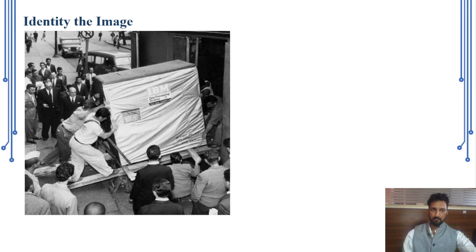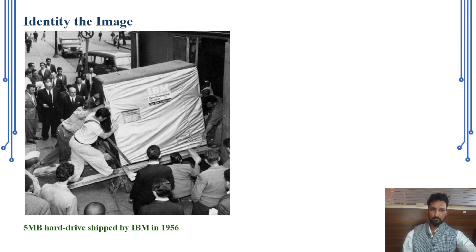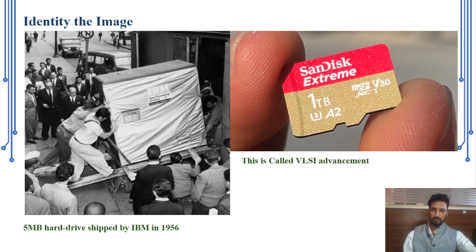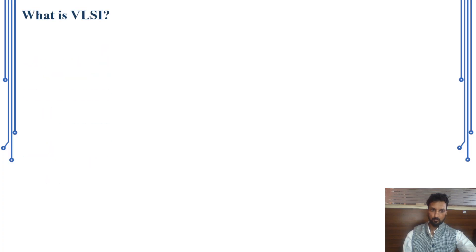There is a very famous image from 1956: a 5-megabyte hard drive shipped by IBM, the size of a large refrigerator. The beauty of VLSI lies in contrast — now you can hold a SanDisk memory card of around 1 terabyte in your hand. In the last 70 years, we have come a very long journey of advancement.